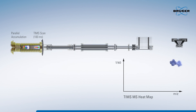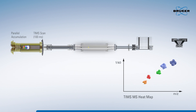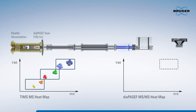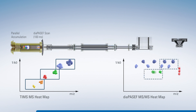Bruker and collaborators realized that a DIA approach using PASEF could take advantage of the correlation between ion mobility and mass. This technique, known as DIA-PASEF, uses windows that start at high mass as larger species elute at the beginning of the TIMS scan, sliding down to lower mass windows as the TIMS scan continues.